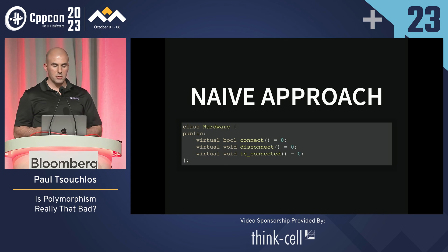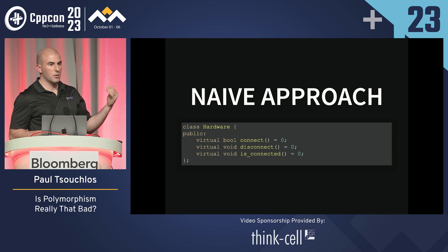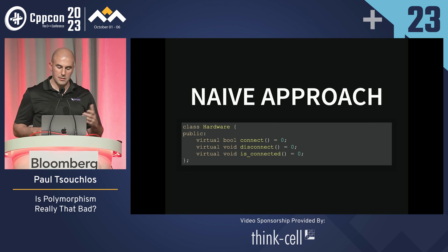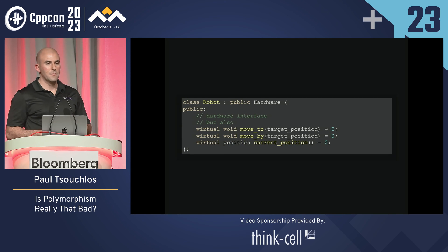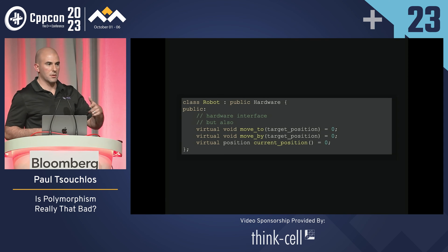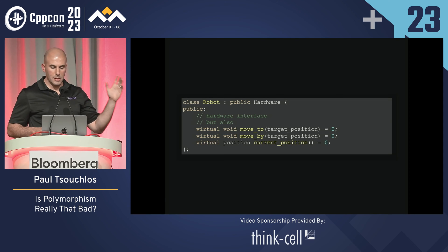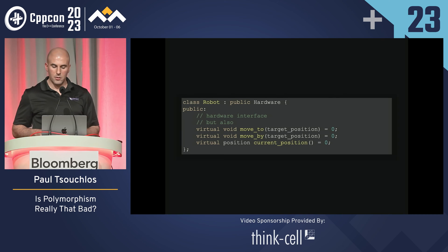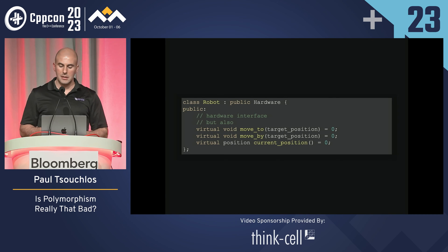Here's our naive approach. We made this base hardware class — which ended up being a misnomer — but it connects to some hardware device that can disconnect, and you can probe the status. Then for every interface we want to abstract, like the robotics or the x-ray controller, it would implement this interface in addition to its hardware-specific features.